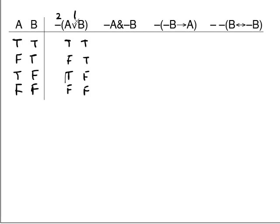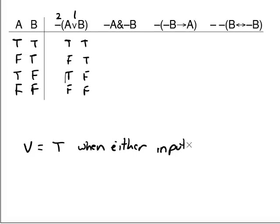So we're going to work on the wedge first, then the dash. The wedge is true when either input is true — that's when an or-statement is true, when at least one component is true. So: true wedge true is true, false wedge true is true, true wedge false is true, and false wedge false is false.